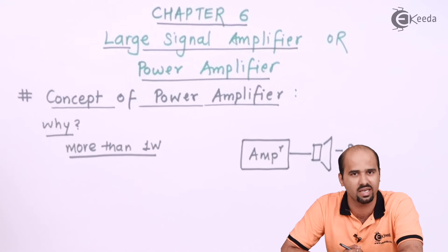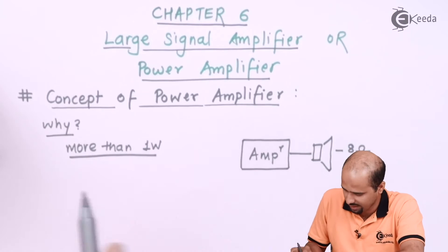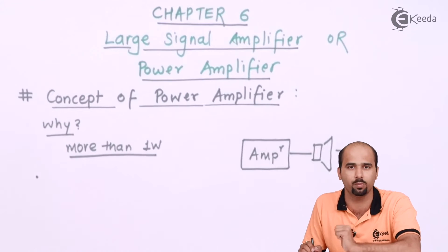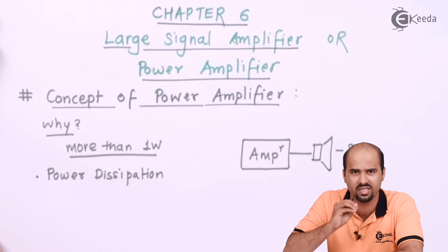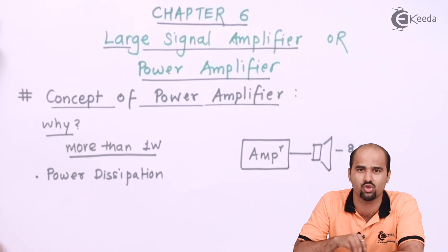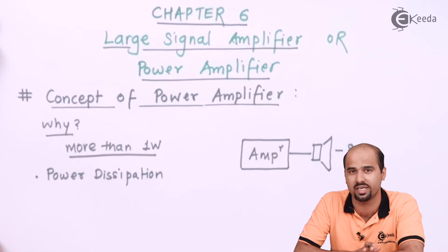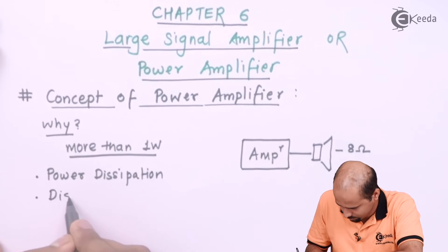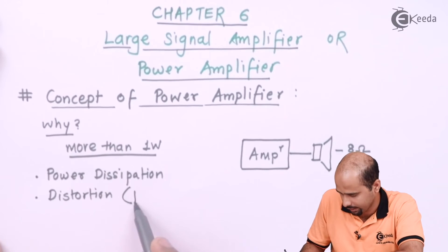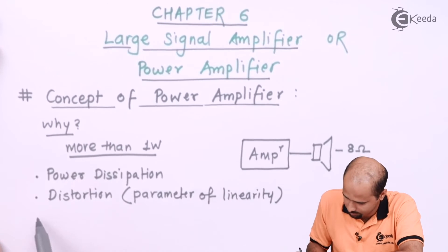If resistance is very less, then I am sourcing a very large amount of current. A regular voltage amplifier or current amplifier does not have that capacity. That is why we use the power amplifier. We have to focus on a few parameters: first, power dissipation — we should have less power dissipation so that the DC power applied is efficiently used at the output side. Second is distortion, which is essentially a parameter of linearity.